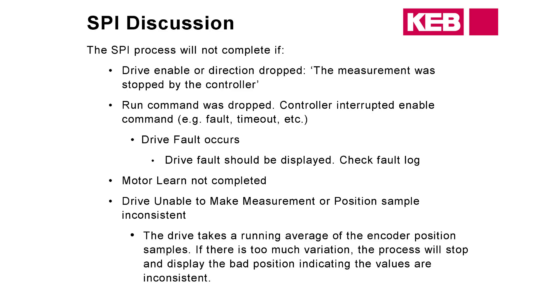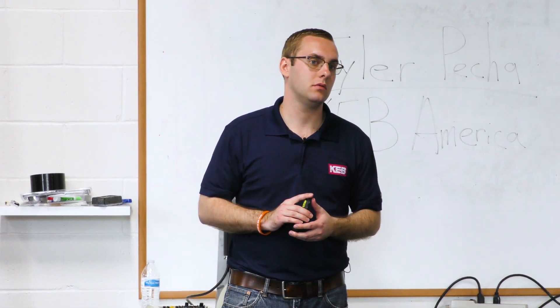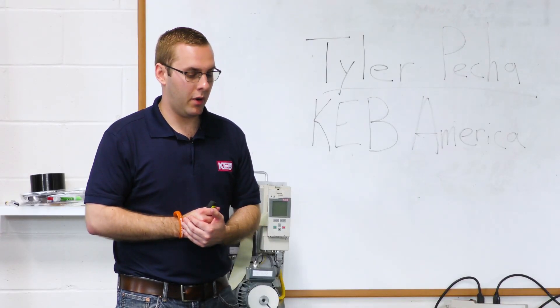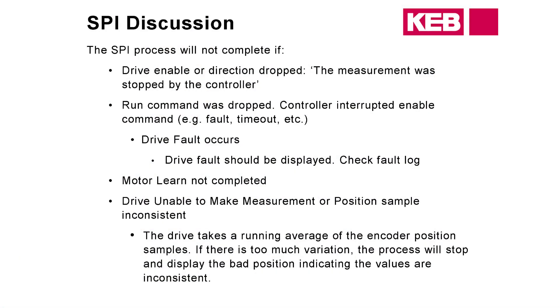A few things that could happen during the SPI. You might get an ECDD — error calculating motor data — and wonder why, since you already did the autotune. That's because the drive actually uses the motor model to calculate the encoder position. Encoder position uses motor inductance in the calculation, so if you've got bad motor data to start, it won't be able to calculate the correct encoder position. So again, motor data is something to check.